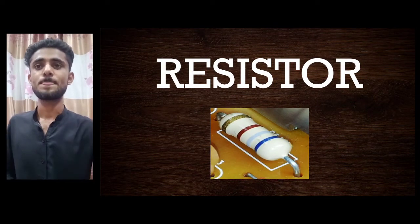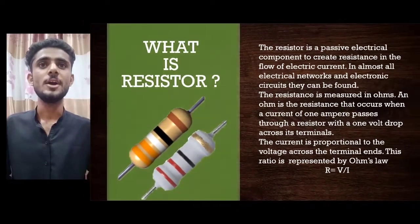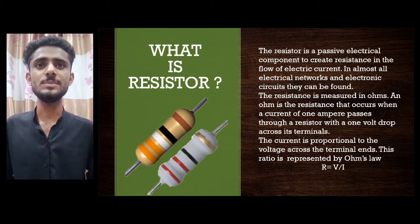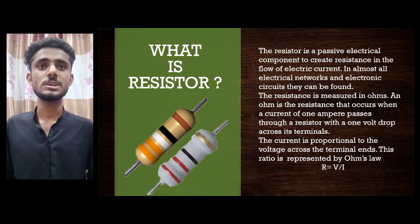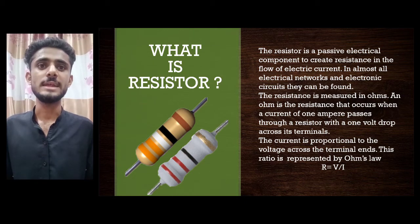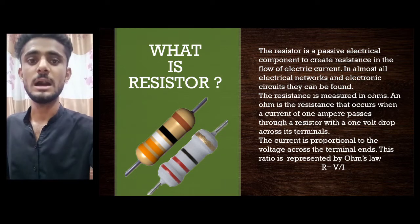What is a resistor? A resistor is a passive electric component that creates resistance in the flow of electric current, found in almost all electrical networks and electronic circuits. Resistance is measured in ohms (Ω). One ohm is the resistance that occurs when a current of one ampere passes through a resistor with a one-volt drop across its terminals. The current is proportional to the voltage across the terminals, as represented by Ohm's law: R = V / I.